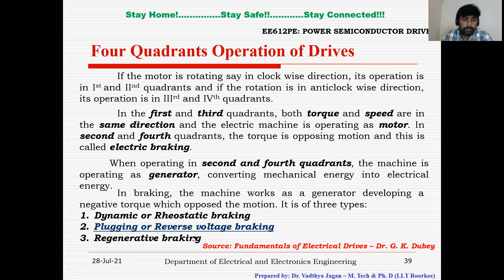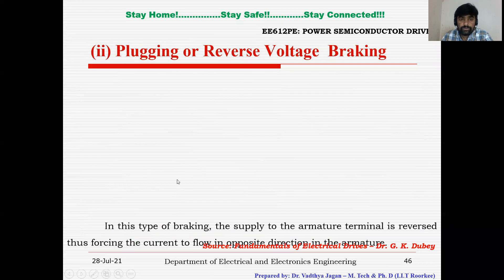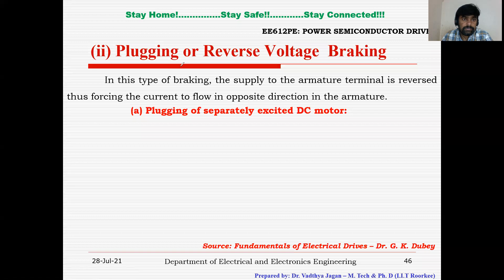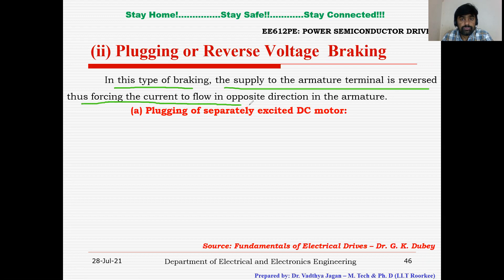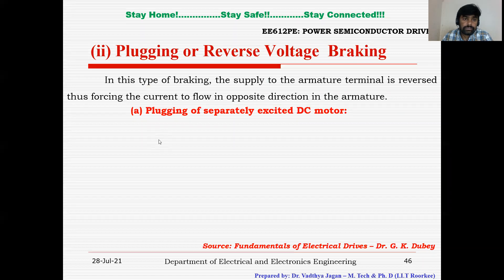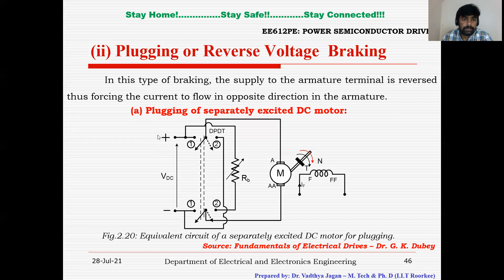In case of plugging or reverse voltage braking, we will remove the supply terminal and connect the armature terminal to a reverse voltage. In this type of braking, the supply to the armature terminal is reversed, thus forcing the current to flow in the opposite direction in the armature circuit. First, we will consider the separately excited DC motor — the plugging of a separately excited DC motor.